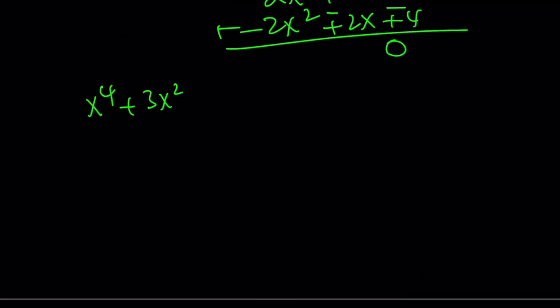x to the 4th plus 3x squared plus 4 divided by x squared plus x plus 2 is going to be x squared minus x plus 2. And now the third method.